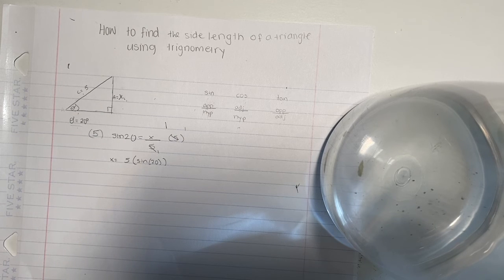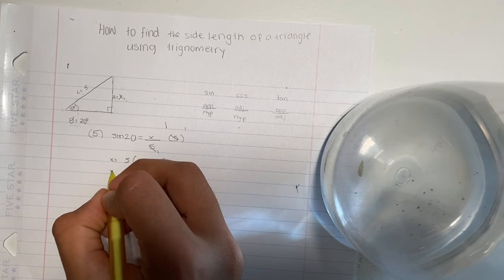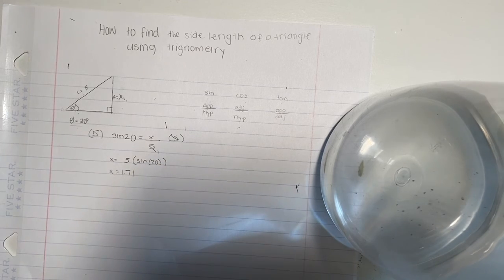And then you multiply that by 5, which the answer will be 1.71. That's how you do it.